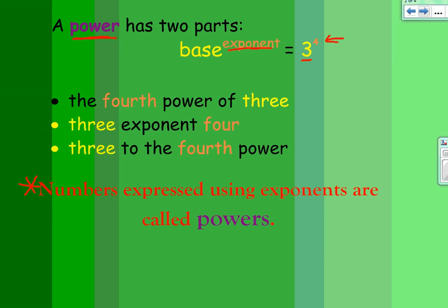Okay, you can say these a few different ways. First of all, this one can be said the fourth power of three. We could also say three exponent four, or we could say three to the fourth power. They all mean the same thing.